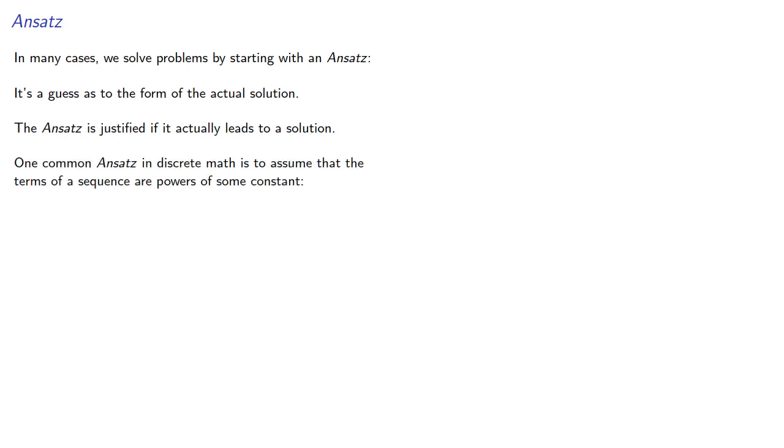In many cases, we can solve problems by starting with an ansatz. It's a guess as to the form of the actual solution. The ansatz is justified if it actually leads to a solution. One common ansatz in discrete math is to assume the terms of a sequence are powers of some constant: 1, r, r squared, and so on. So, suppose A is an n by n circulant matrix, and an eigenvector x has the form 1, r, r squared, and so on.